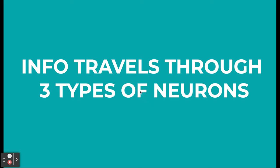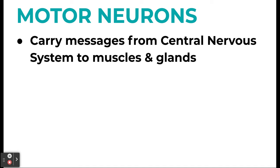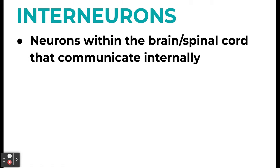We also looked at three main types of neurons. Sensory neurons carry messages from tissues and sensory receptors to the brain and spinal cord — like if there's a spider on you, your sensory neurons sense something crawling and send that message to the brain. Motor neurons carry messages from the central nervous system to the muscles and glands — that's what tells you to slap the spider off. Interneurons are within the brain and spinal cord and communicate internally — 'inter' meaning within.